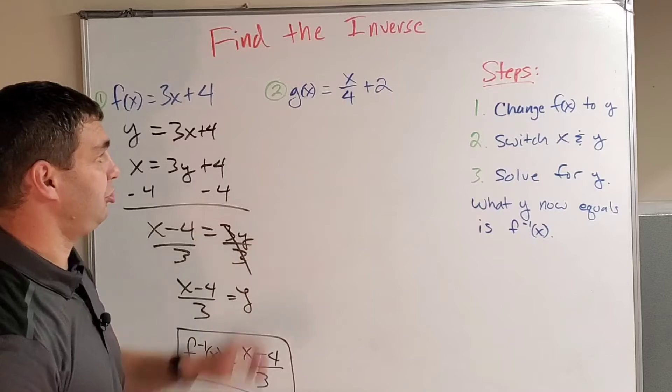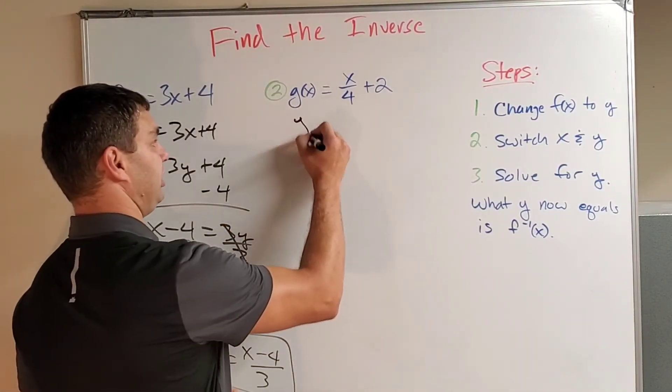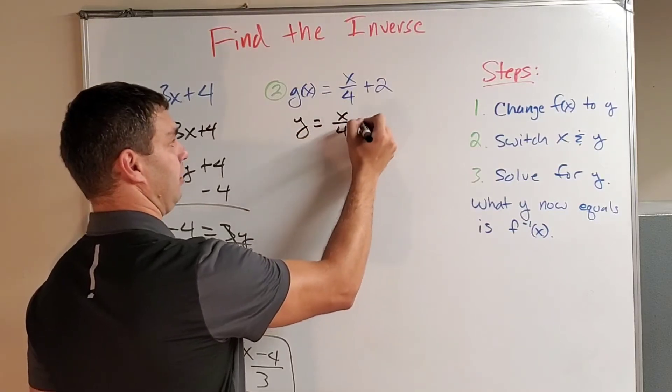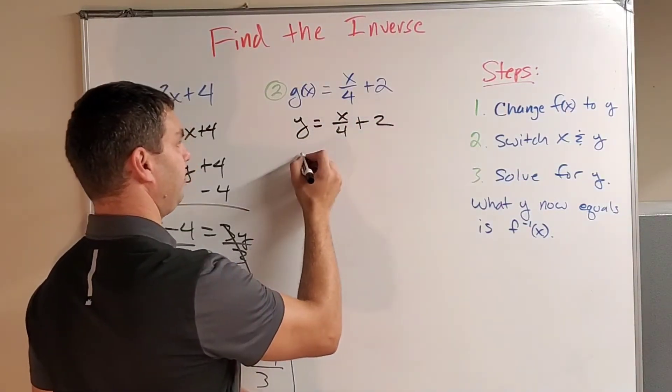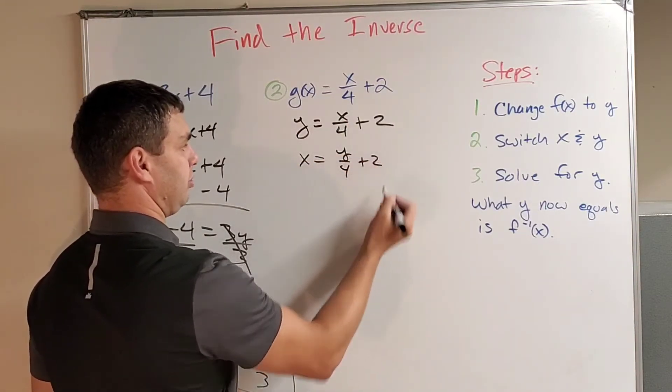Let's try it with g. g of x equals x over 4 plus 2. So for this one, I'm going to switch my g of x to be y. Write down the rest. Okay? Then switch the x and the y. Switch those places. So x equals y over 4 plus 2.